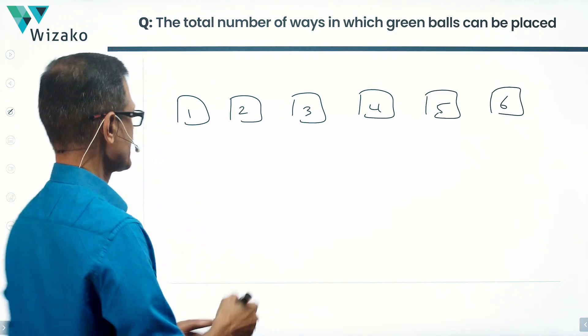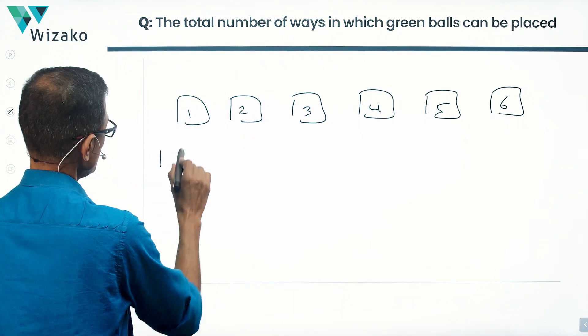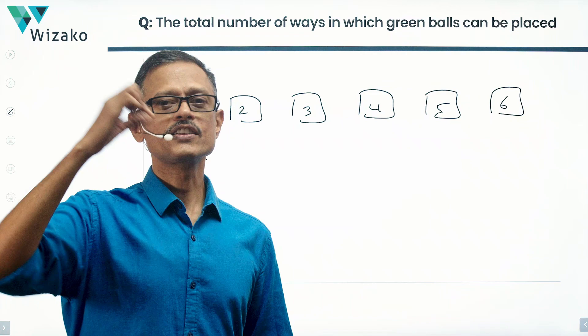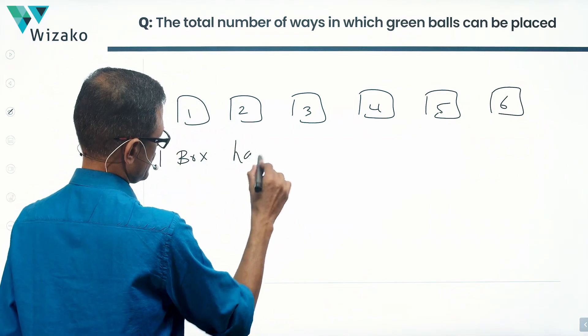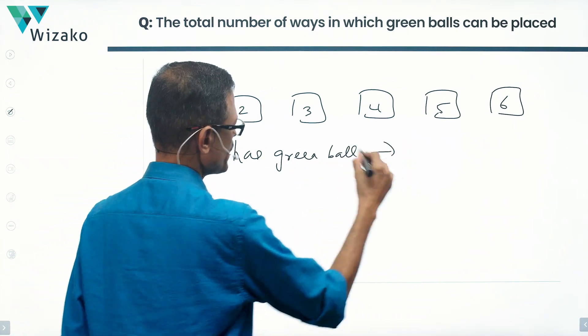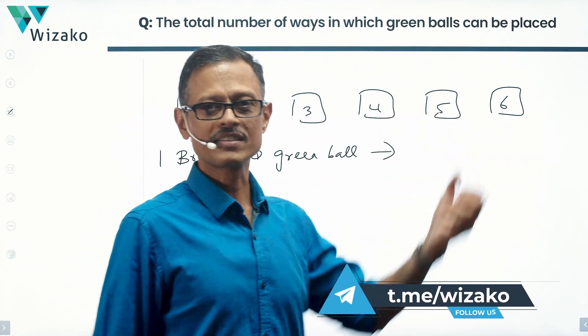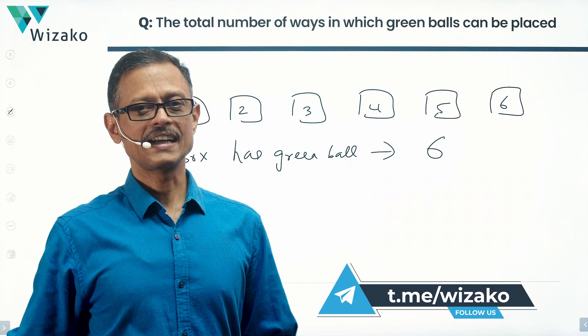Let's start with the easiest case. At least one box needs to have green ball. We'll just say only one box contains green ball. This is one such possibility. We'll call it as case 1. One box has green ball. So how many possibilities? It could be box number 1 or 2 or 3 or 4 or 5 or 6. There are 6 possibilities. So 6 ways in which one box can contain green ball.